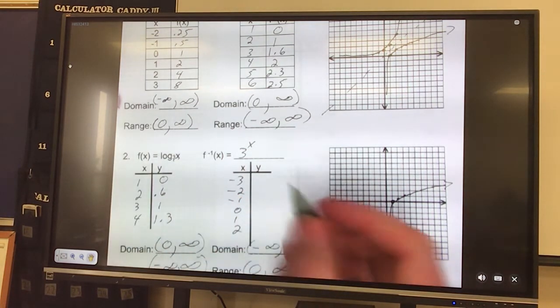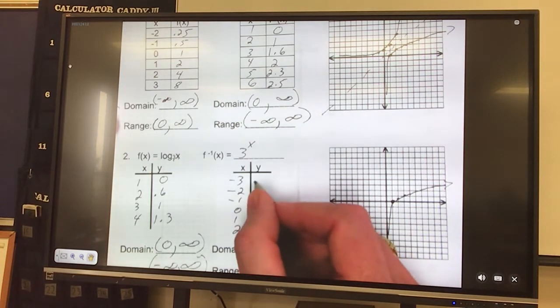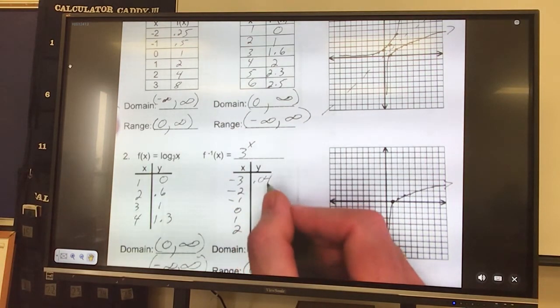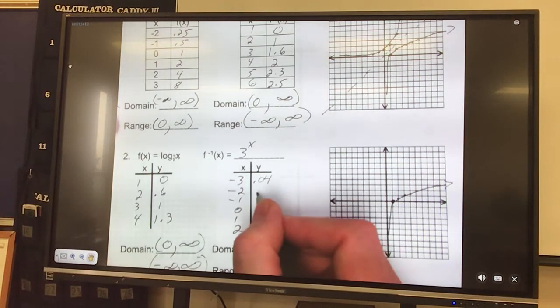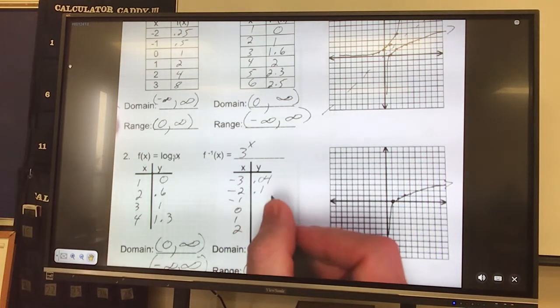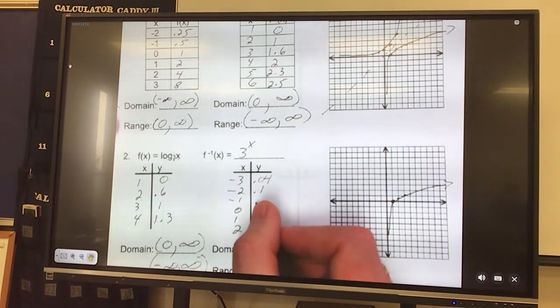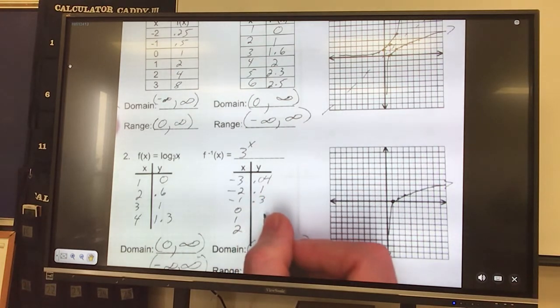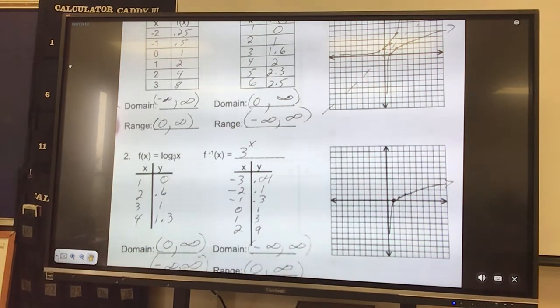So over negative 3 tells me it's 0.04. Negative 2 is 0.1, negative 1 is 0.3, 0 is 1, 1 is 3, 2 is 9. So I can see it goes up quickly at that point.